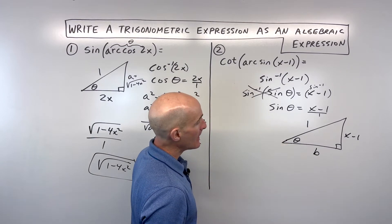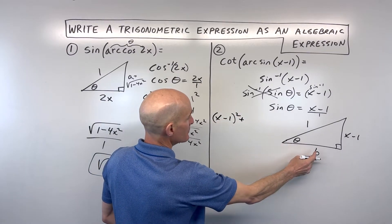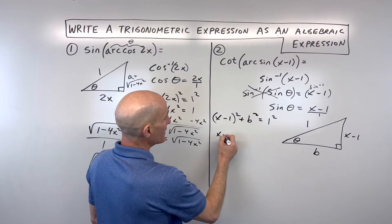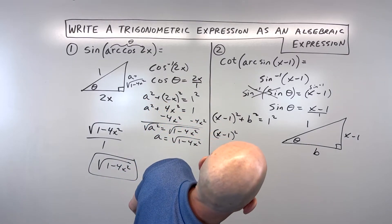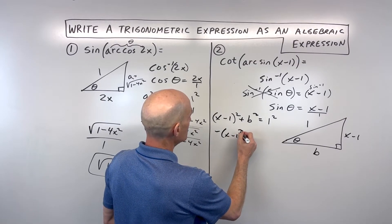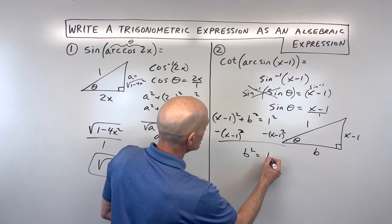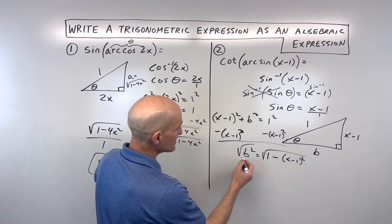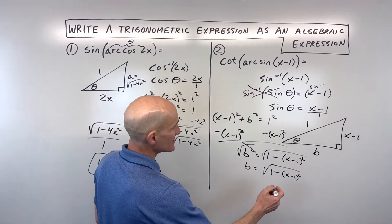Anything can be written as a fraction by putting it over 1, so the sine is opposite over hypotenuse. We want to solve for this side here — let's call it b. Using the Pythagorean theorem: a squared plus b squared equals c squared, which in this case is 1 squared. So I have the quantity x minus 1 squared plus b squared equals 1. Let's subtract the quantity x minus 1 squared from both sides to get b squared by itself. So b squared equals 1 minus the quantity x minus 1 squared. Taking the square root of both sides, b equals the square root of 1 minus the quantity x minus 1 squared.